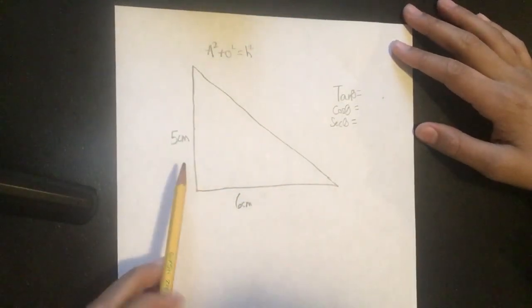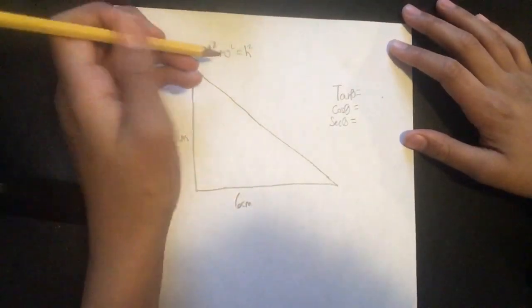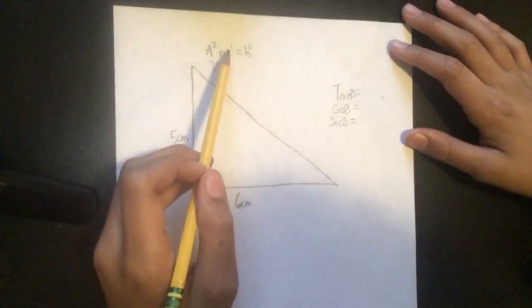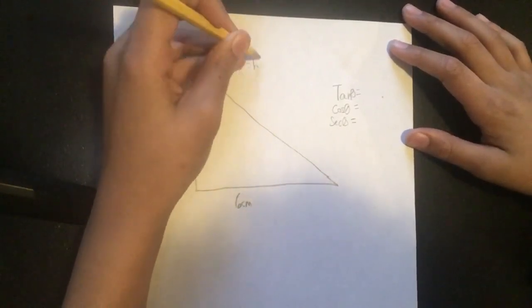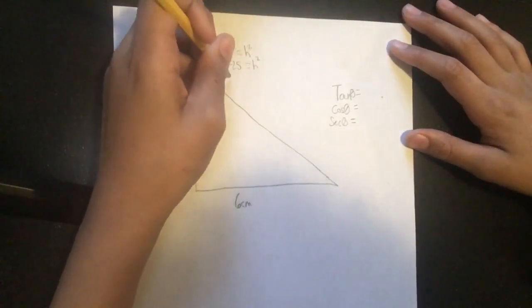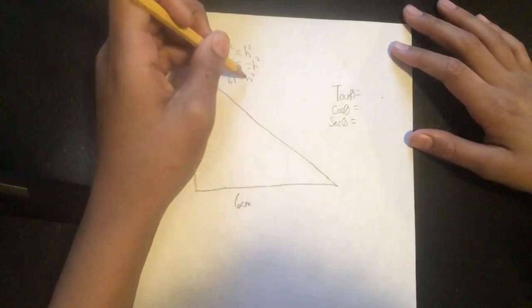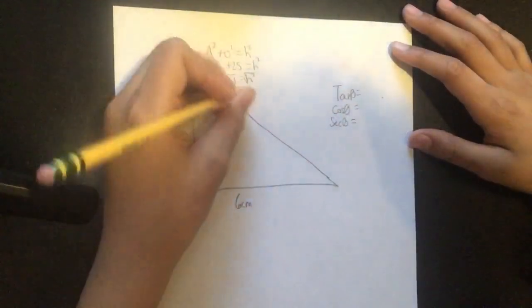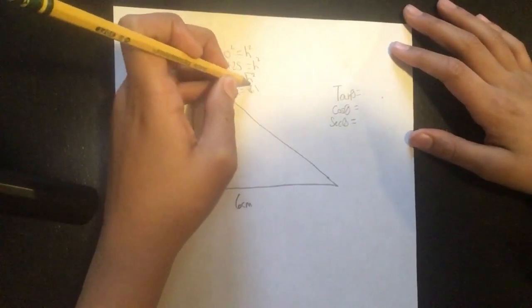The adjacent squared in this situation is going to be 6 squared, which is 36, and 5 squared, which is going to be the opposite, is going to be 25. If we combine like terms, we have 61 equals hypotenuse squared.